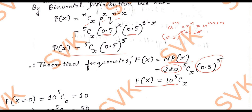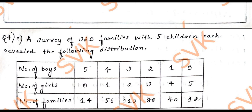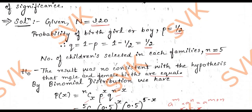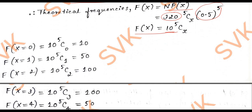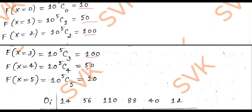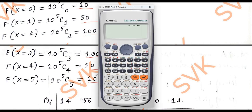Now we compute the theoretical frequency table. The x values are 0, 1, 2, 3, 4, 5. For x=0: 10 * 5C0 = 10. For x=1: 10 * 5C1 = 50. For x=2: 10 * 5C2 = 100. For x=3: 100. For x=4: 50. For x=5: 10. To calculate using a calculator, use the nCr function with shift and division symbol, then press calc and input the x value.